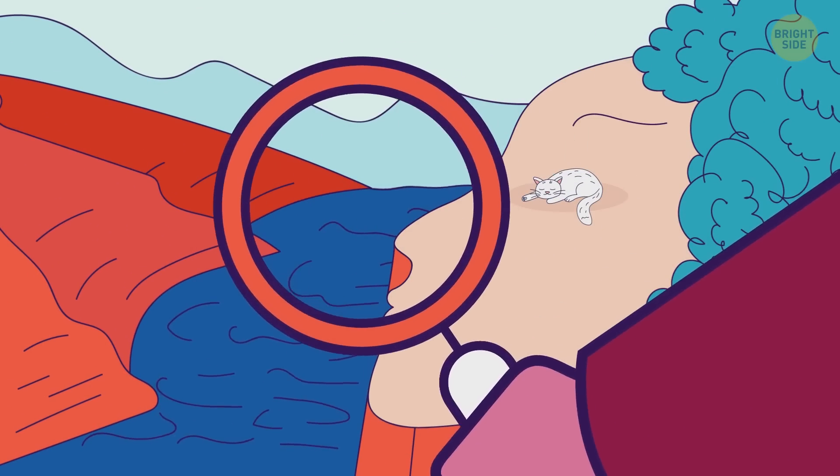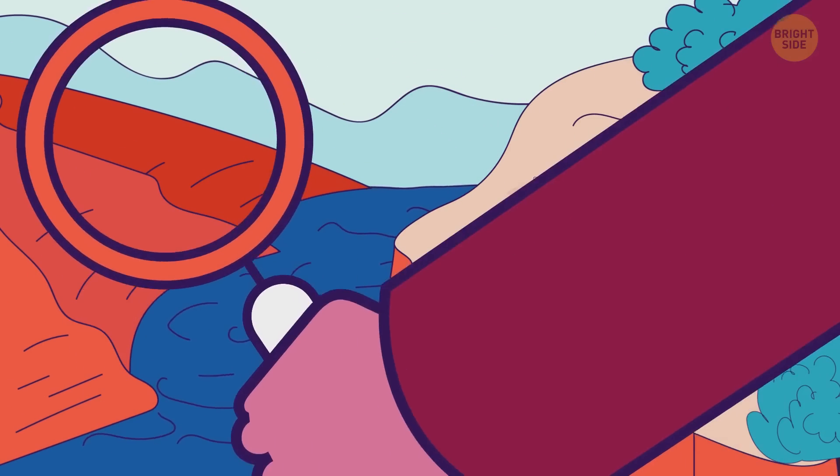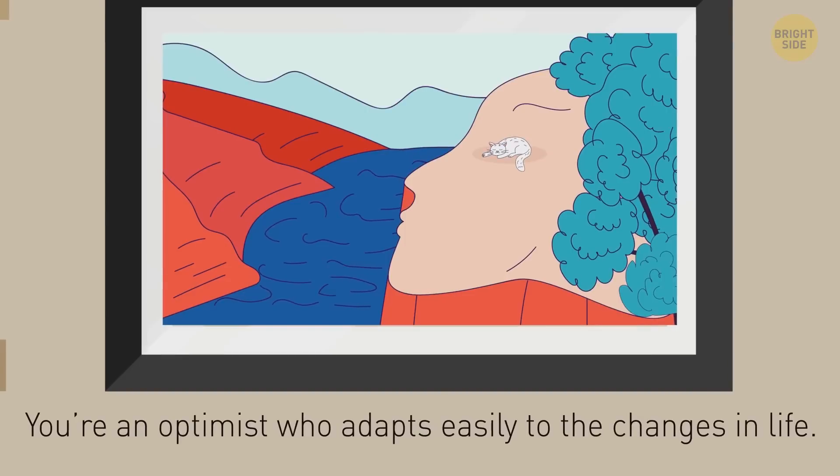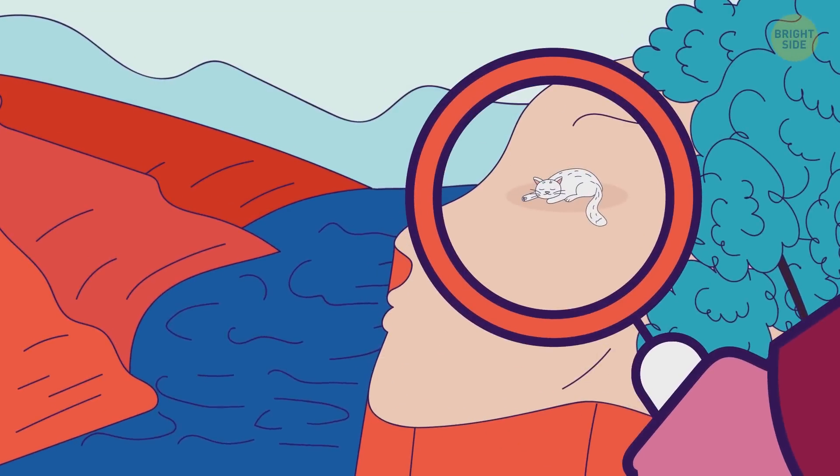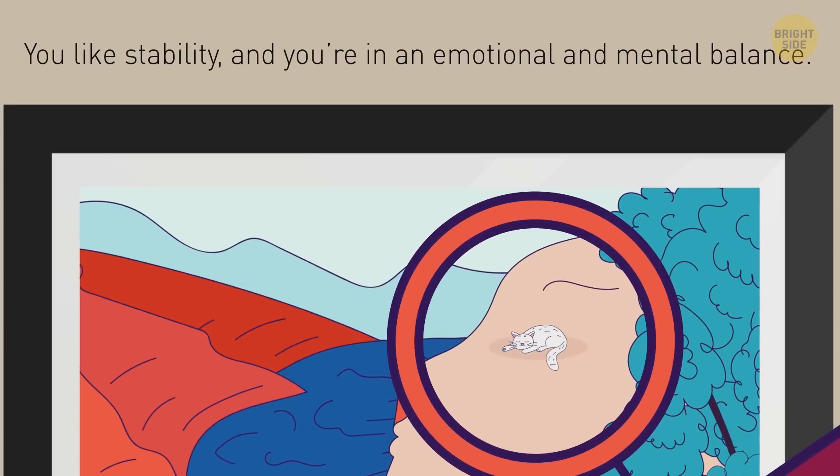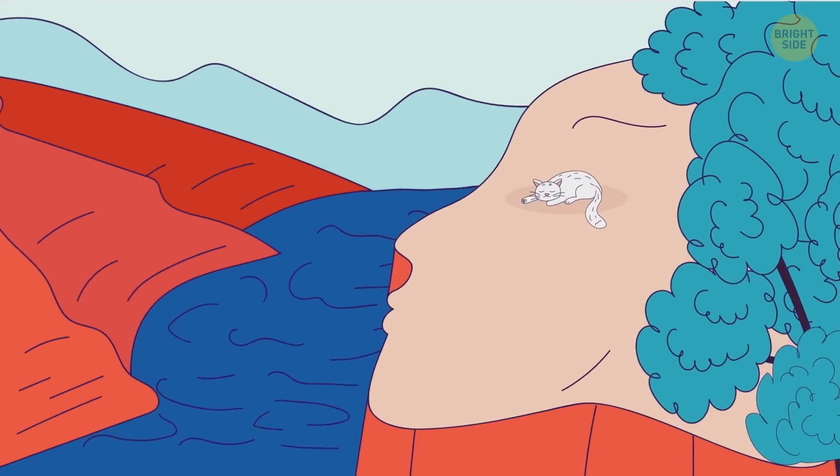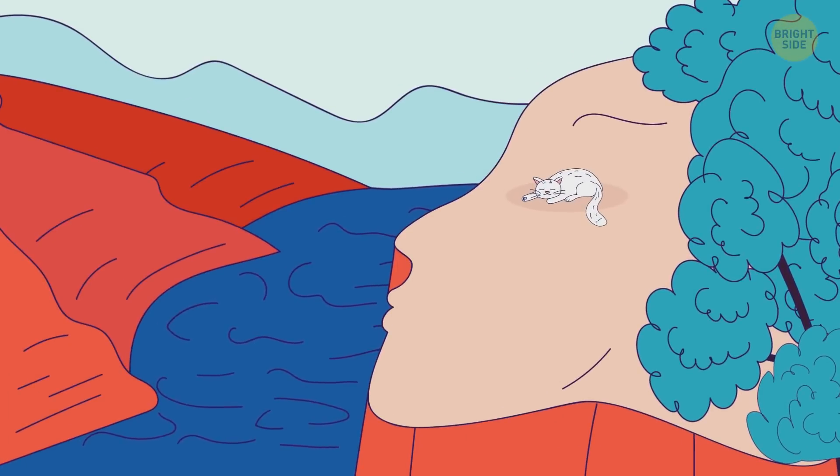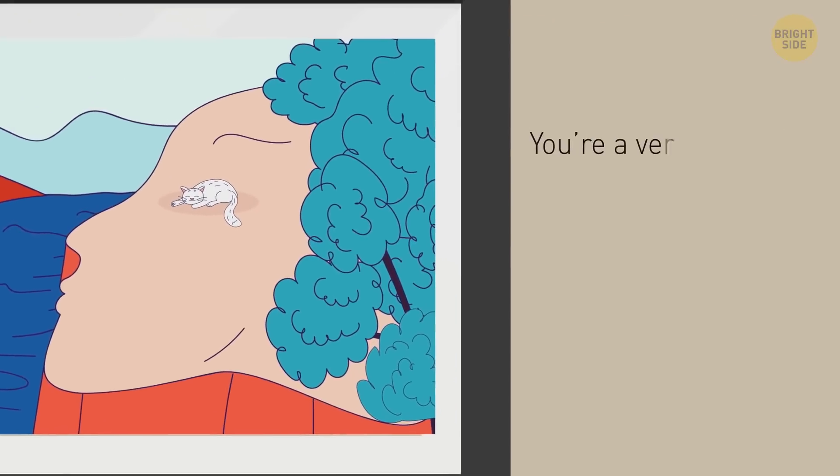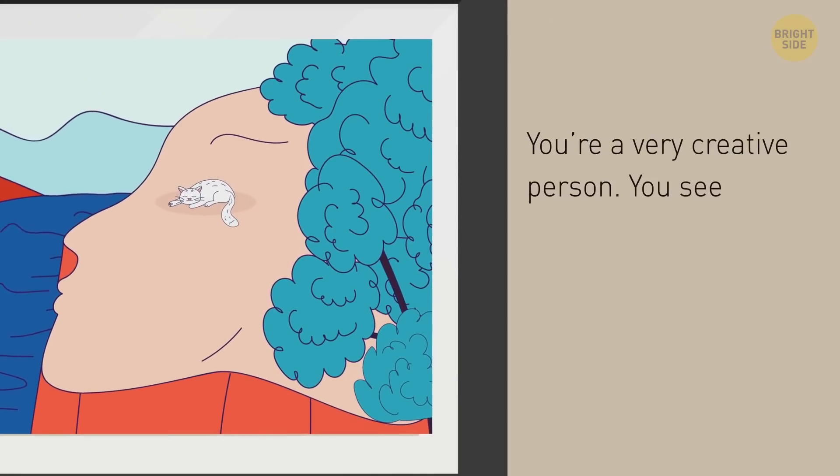Now, what do we have here? Is it a river and a cliff? Then you're an optimist who adapts easily to the changes in life. But if the first thing you see is a white cat, then you like stability. And you're in an emotional and mental balance. And you're a cat lover, of course. And if you see a face here, then you're a very creative person. You see a new opportunity in every detail of the world. And you're very curious.